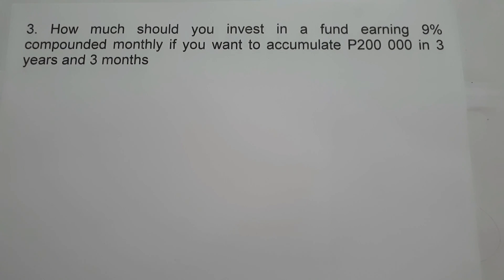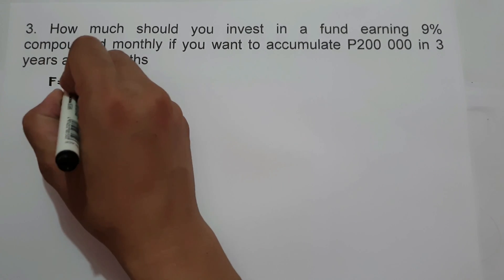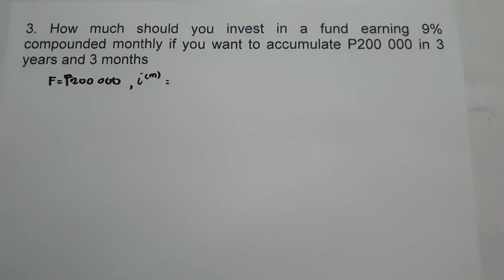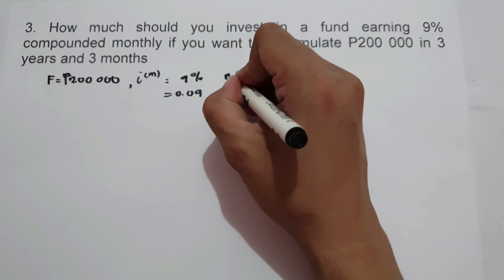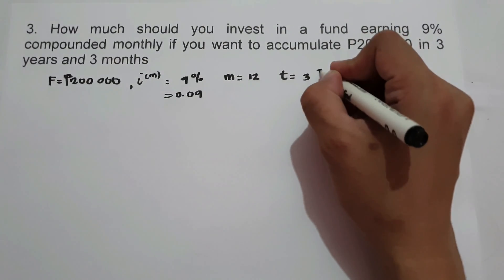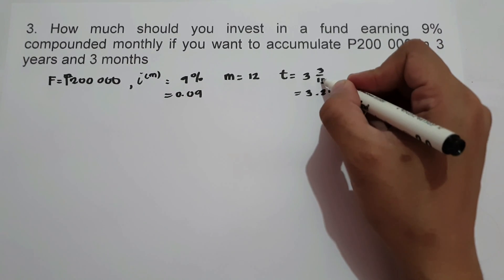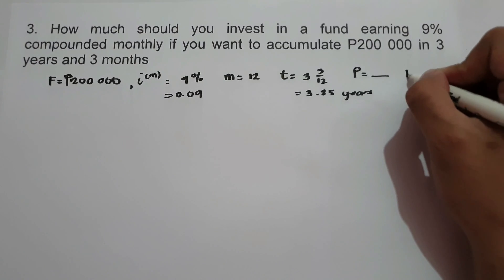On the last example, how much should you invest in a fund earning 9% compounded monthly if you want to accumulate 200,000 pesos in 3 years and 3 months? The given are: F equals 200,000, nominal rate equals 9% or 0.09, frequency of conversion is monthly so M equals 12, and time is 3 years and 3 months, that is 3 and 3 over 12, or 3.25 years. We are looking for the present value and the interest.